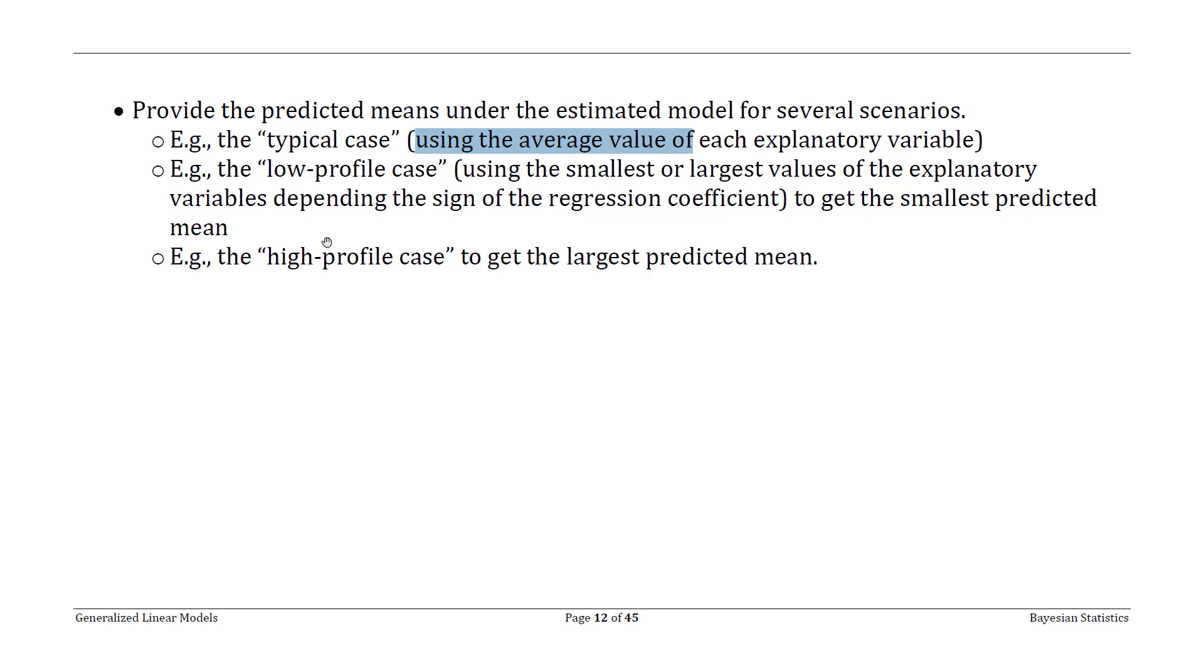And then there are low-profile cases and high-profile cases. And you have to think about this, but essentially this is changing your explanatory variables to be the most extreme values, either the smallest or largest values, to get the smallest predicted mean based on the data you actually observed.